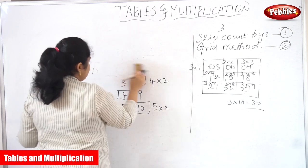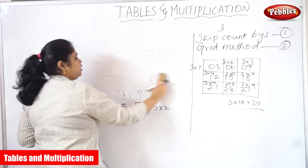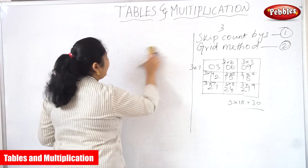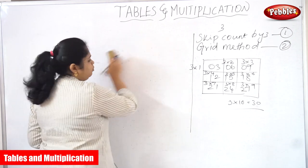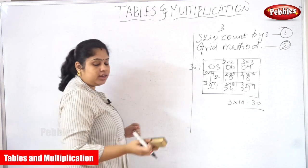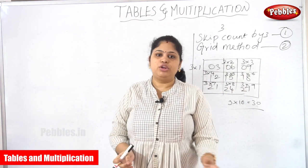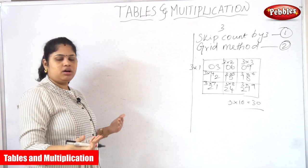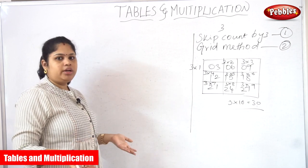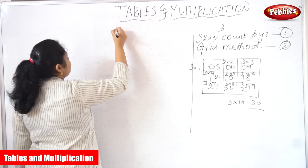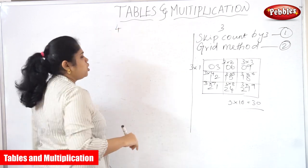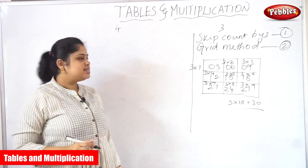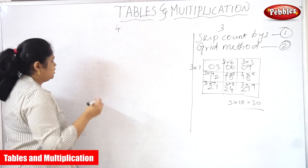The skip counting method is very useful up to five and ten. But if you find it difficult, we have another alternative method to read the fourth table — with the help of the star method.